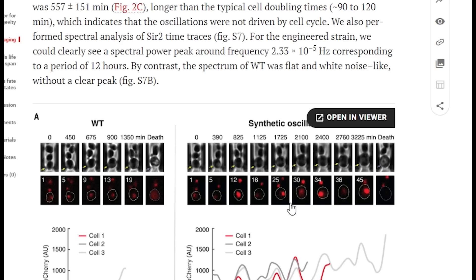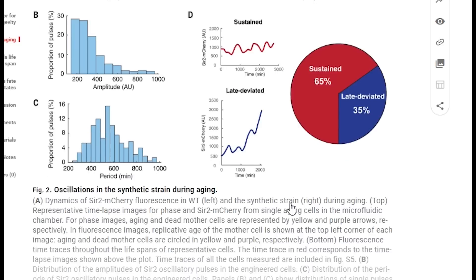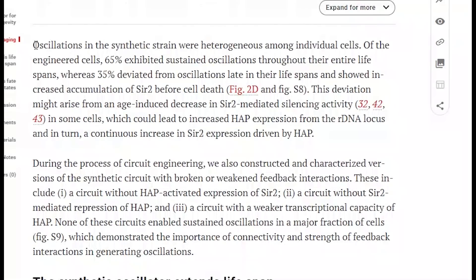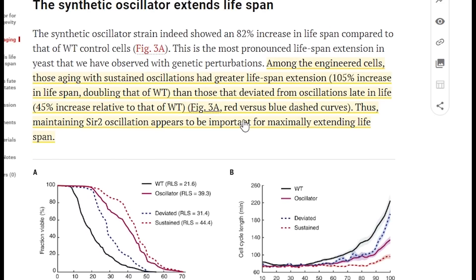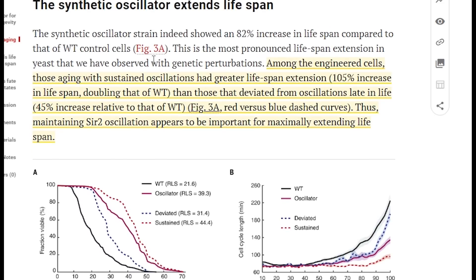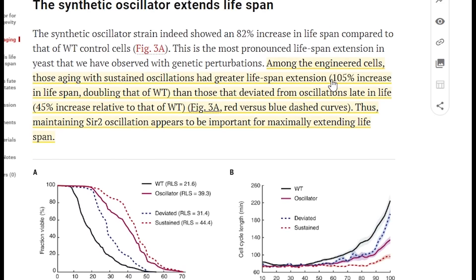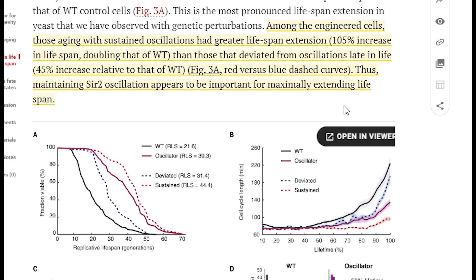So did they actually have any influence over lifespan by having this oscillatory circuit? Well among the engineered cells, those aging with sustained oscillations actually had greater lifespan extension. It was 105% increase in lifespan, doubling that of wild type for those with the sustained oscillation.